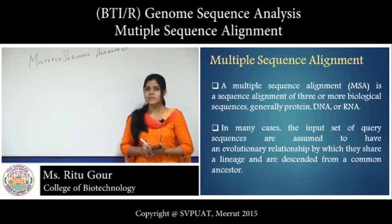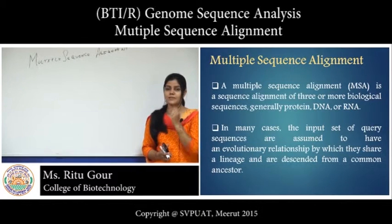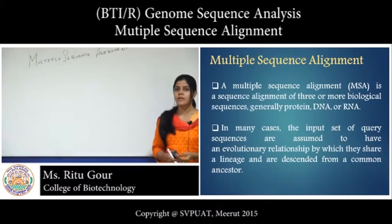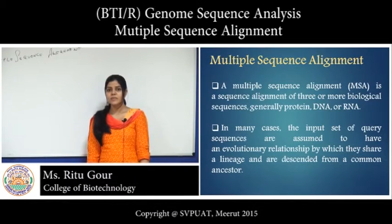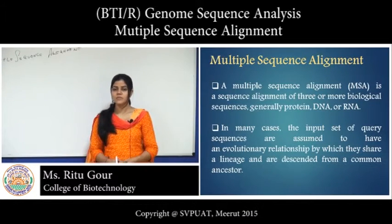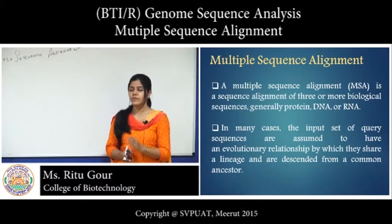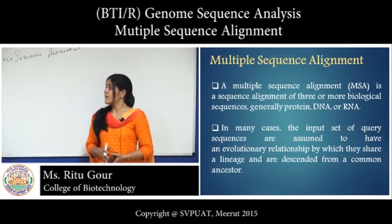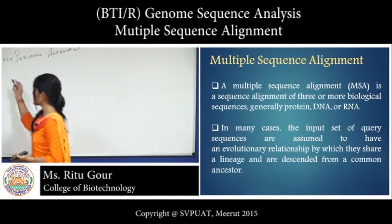With the help of multiple sequence alignment, we can create the phylogenetic tree, we can analyze any sequences on the basis of its similarities, homology modeling, and it is also used to find the motif. It is a more heuristic method compared to pairwise sequence alignment, because in multiple sequence alignment we compare two or more sequences at a time, which is a more complicated process and very time consuming to do by hand.